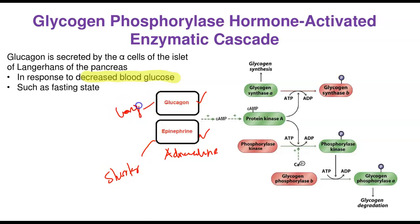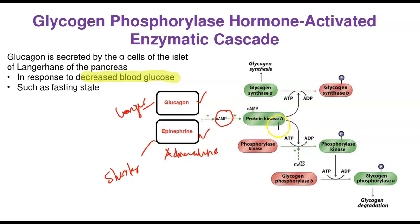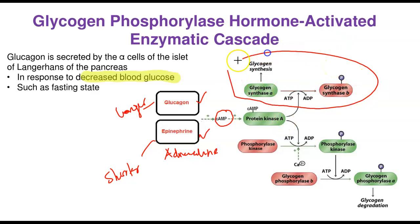Both glucagon and epinephrine act to increase blood glucose by activating glycogen phosphorylase, which breaks down glycogen. These two hormones bind to receptors on the cell membrane, activate adenylyl cyclase, which results in synthesis of cAMP. The cAMP then activates protein kinase A (PKA). Protein kinase A then leads to phosphorylation of phosphorylase kinase — a specific protein kinase that phosphorylates glycogen phosphorylase.